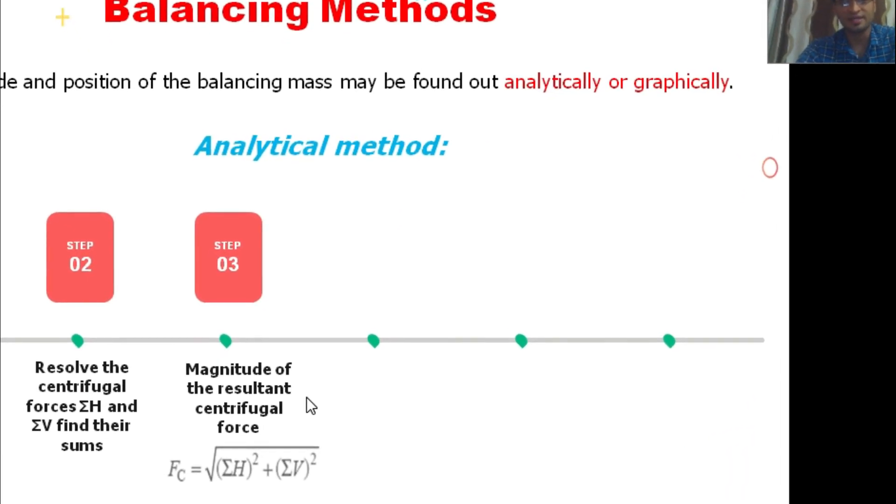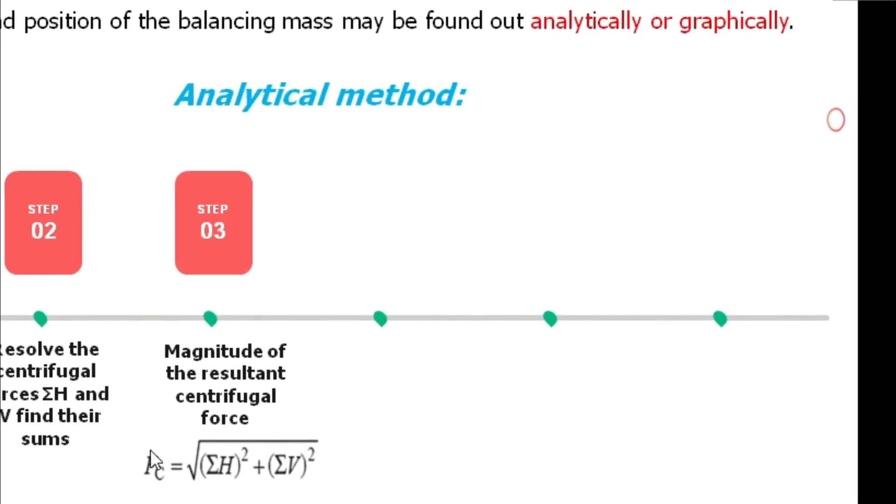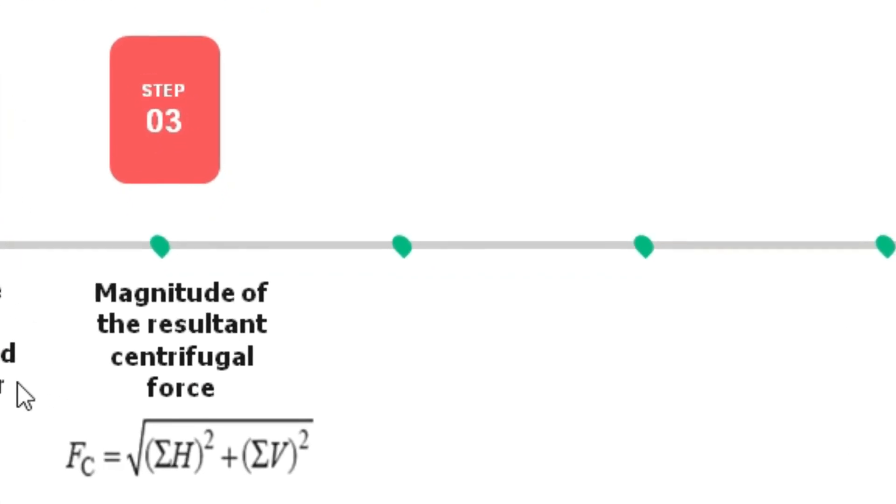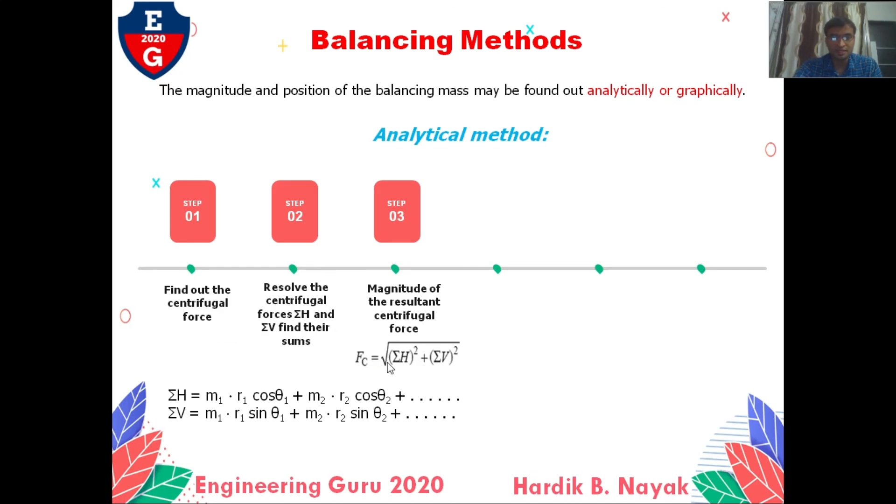Third step: find the magnitude of the centrifugal force, Fc. How can we find Fc? From step number 2, we found summation of H value and summation of V value, horizontal and vertical. From this, we find centrifugal force Fc equals square root of summation of H whole square plus summation of V whole square.